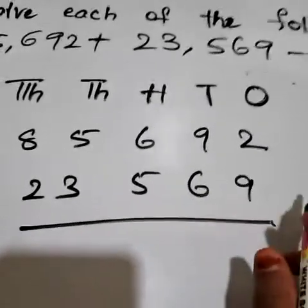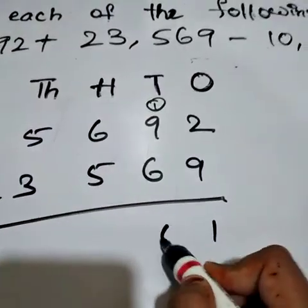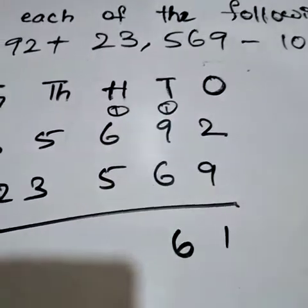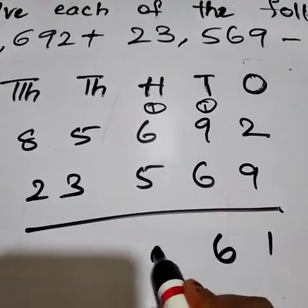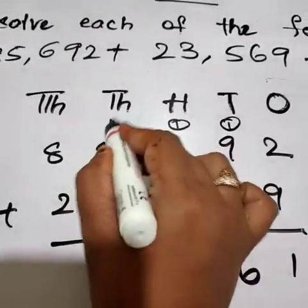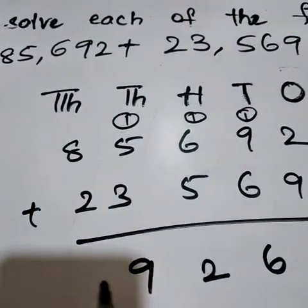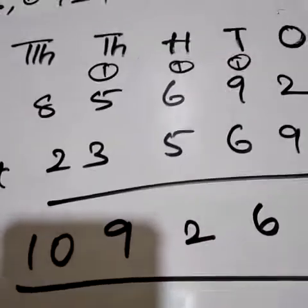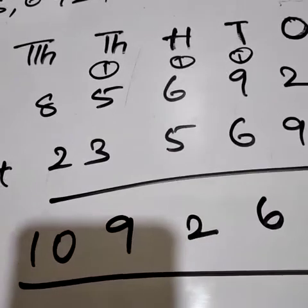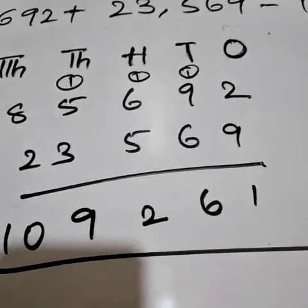9 plus 2, 11. 1 carry here. 9 plus 1, 10. 10 plus 6, 16. 6 plus 1, 7. 7 plus 5, 12. So 2 here, 1 carry here. 5 plus 1, 6. 6 plus 3, 9. 8 plus 2, 10. So we got this answer.